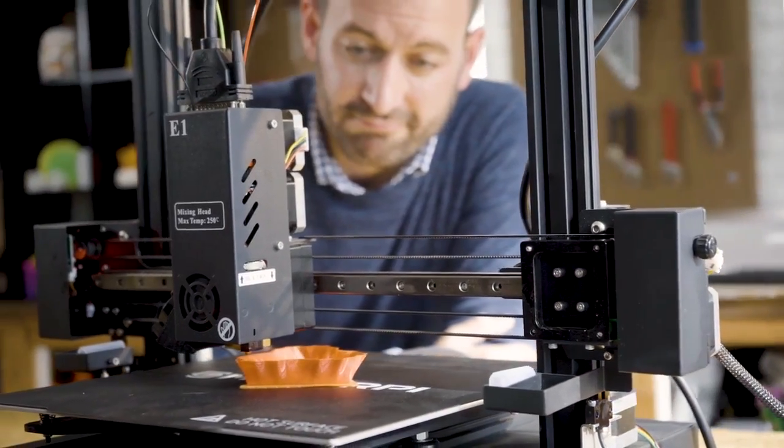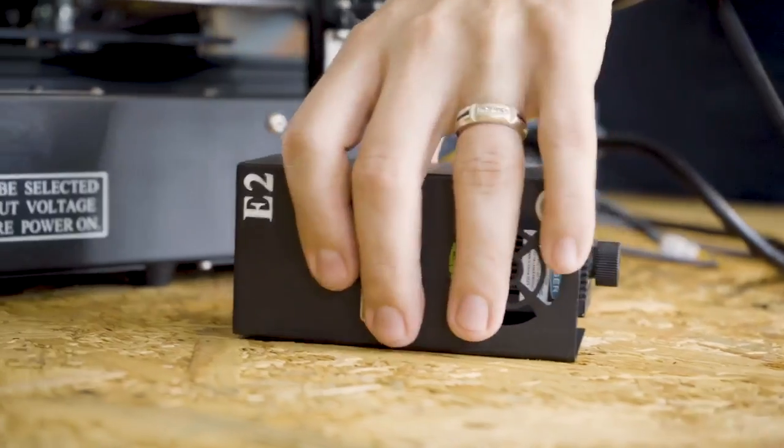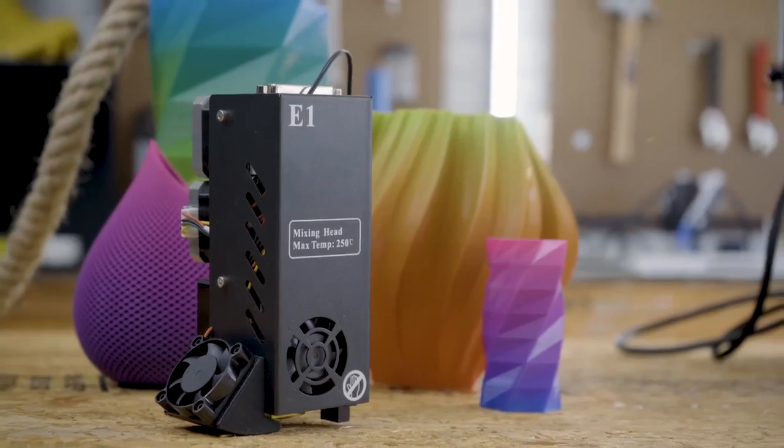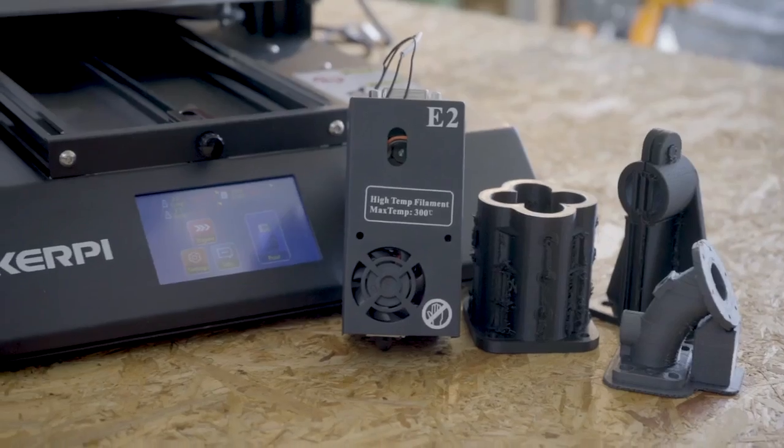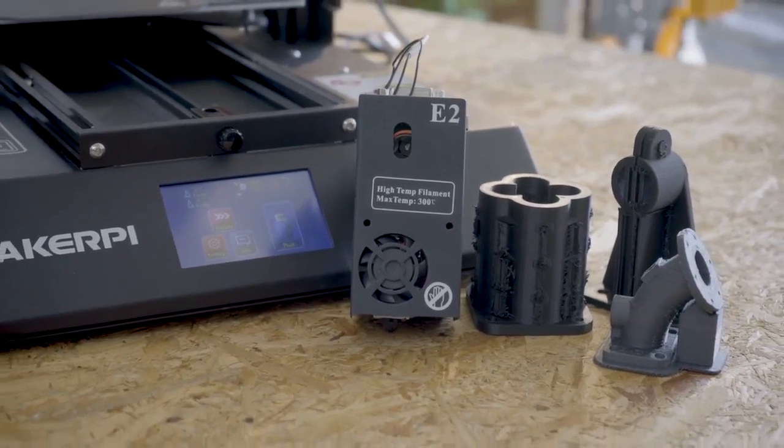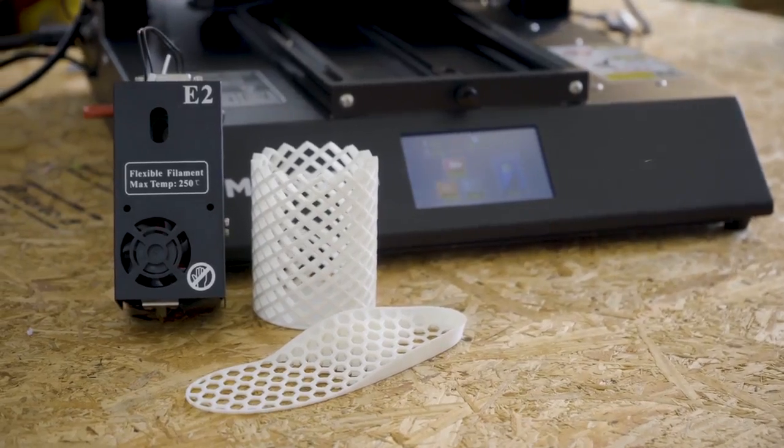Our independent dual extruder operation is a first-of-its-kind modular head that allows you to quickly switch between a mixed extruder, a set of independent dual extruders, an all-metal high-temperature extruder with hardening steel nozzle, and a dual-gear extruder with flexible filaments.